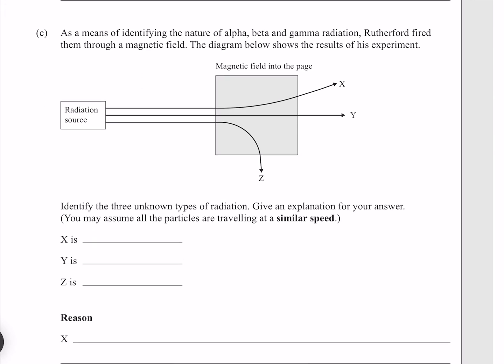As a means of identifying the nature of alpha, beta, and gamma radiation, Rutherford fired them through a magnetic field. The diagram below shows the results of his experiment. Identify the three unknown types of radiation. Give an explanation for your answer. You may assume all the particles are traveling at a similar speed. First of all, we see that Y is going right through unaffected, so this must be the uncharged gamma radiation.